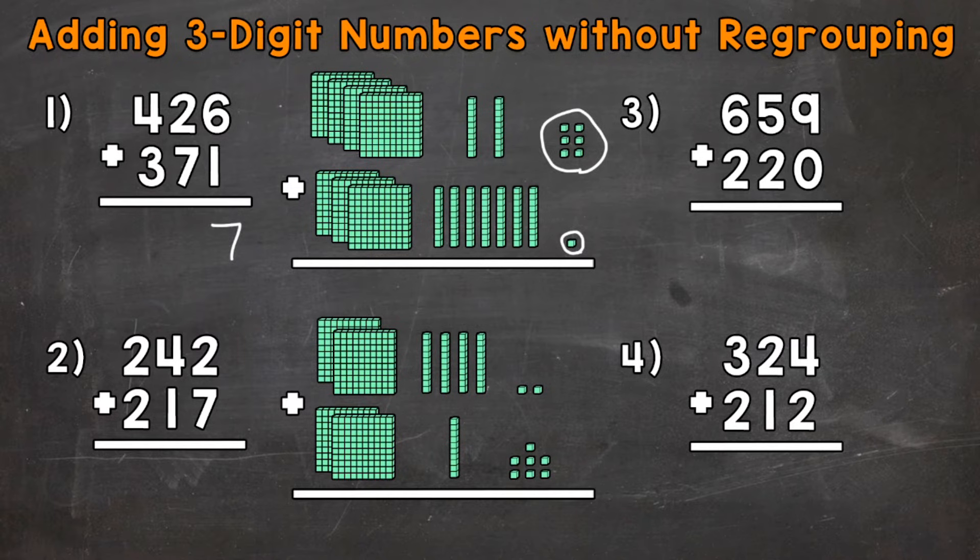Then we have 2 plus 7 in the tens place. That 2 has a value of 20, and the 7 has a value of 70, because the 2 represents 2 groups of 10. Right here. So it has a value of 20, and the 7 has a value of 70.